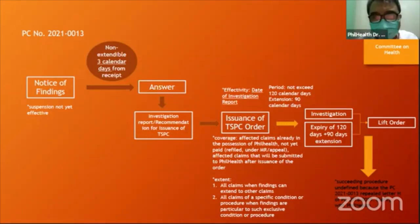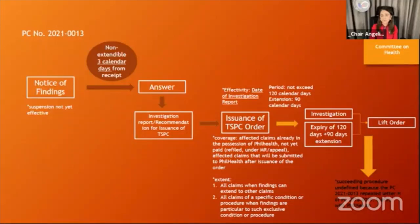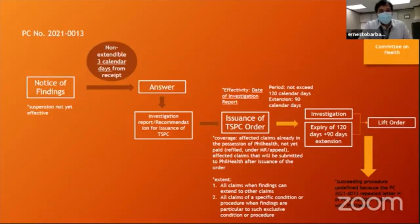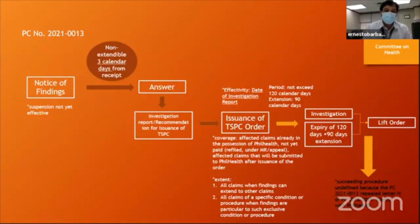Attorney Barbado: As Dr. David earlier said, during the existing previous policy, there was no opportunity for the hospital to answer or explain the findings against them. In the new policy, as part of due process, we give hospitals the opportunity to rebut the findings of the legal department. The reason for the three days is that there is an urgency to prevent continuous payment or disbursement to claims where PhilHealth has evidence that they could have probably occurred from fraud or irregularities. That is why we impose a three-day period for the hospital to answer the allegations.